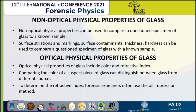Optical physical properties of glass include color and refractive index. Comparing the color of a suspect piece of glass with the color of a reference sample can distinguish whether the two samples share a common source. Significant color differences between glass fragments can be used as a basis for exclusion of a suspect.